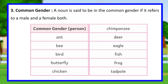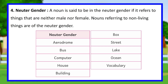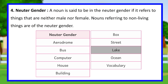Neuter gender: a noun is said to be in the neuter gender if it refers to things that are neither male nor female. Nouns referring to non-living things are of the neuter gender. Examples include: air, room, bus, computer, house, building, box, street, lake, ocean, vocabulary.